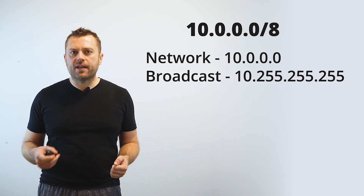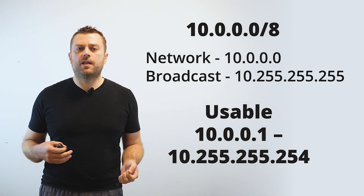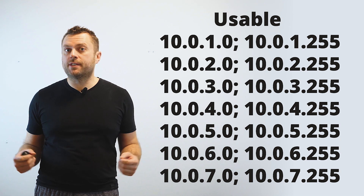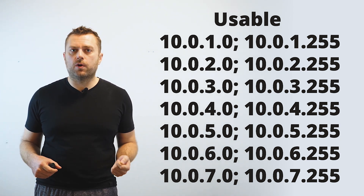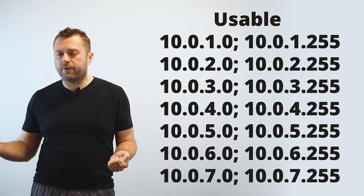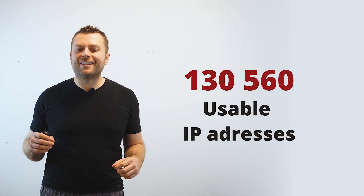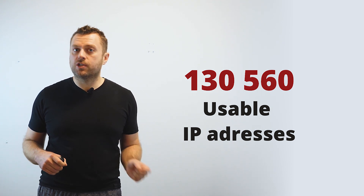That means you can actually use .0 or .255 if you use the proper subnet mask. Let's take this to an extreme. Technically you could use a network of 10.0.0.0/8, which is 255.0.0.0, making your broadcast 10.255.255.255 and giving you a usable range of 10.0.0.1 through 10.255.255.254. Now you have a bunch of usable IP addresses ending in .0 or .255 — like 10.0.1.0, 10.0.1.255, 10.0.2.0, 10.0.2.255 — and you actually have a total of 130,560 usable IP addresses that end in either .0 or .255.